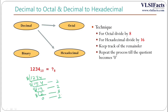Now we collect all the remainders from bottom to top. The bottom remainder is the MSB and the top is the LSB. So the equivalent octal number of 1234 base 10 is 2322 in base 8.